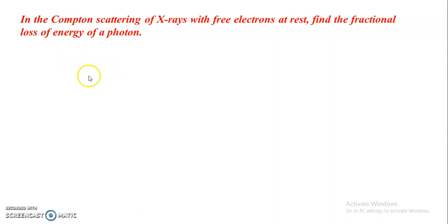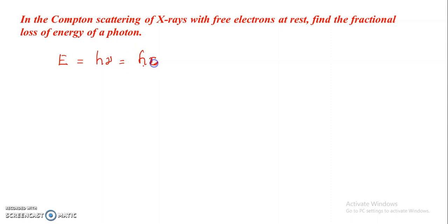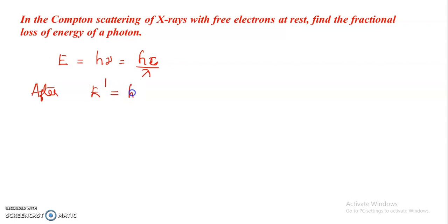Suppose the energy of the photon before collision be E equal to H nu, that is equal to HC by lambda. After scattering, suppose the energy of the photon be E dash equal to H nu dash, that is equal to HC by lambda dash.